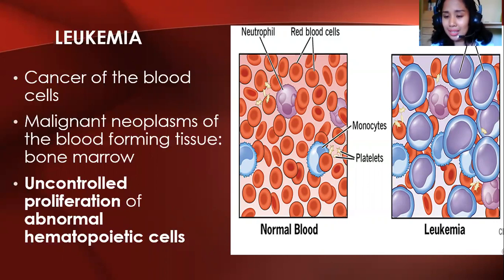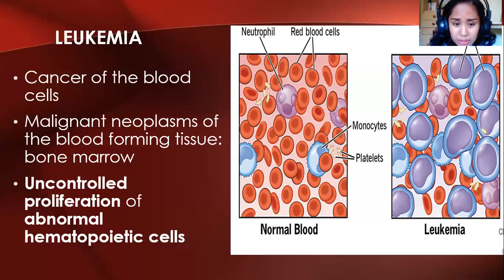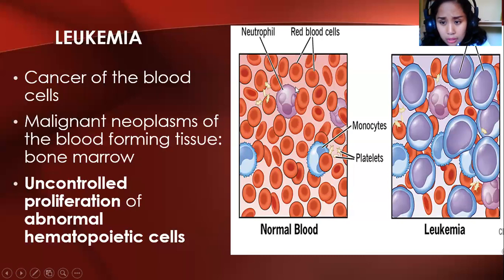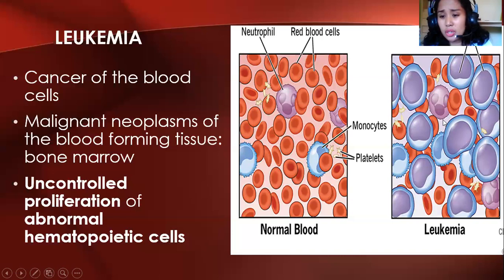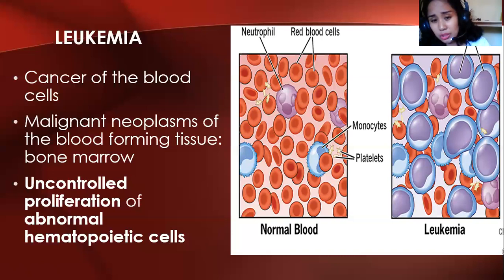There is usually abnormal development and uncontrolled proliferation — excessive production occurring in the bone marrow, which is the site where cells are produced. In a normal blood smear, there should be more red blood cells than WBCs. But in a peripheral blood smear of a leukemic patient, the red blood cells are overcrowded with immature WBCs that look like blasts.